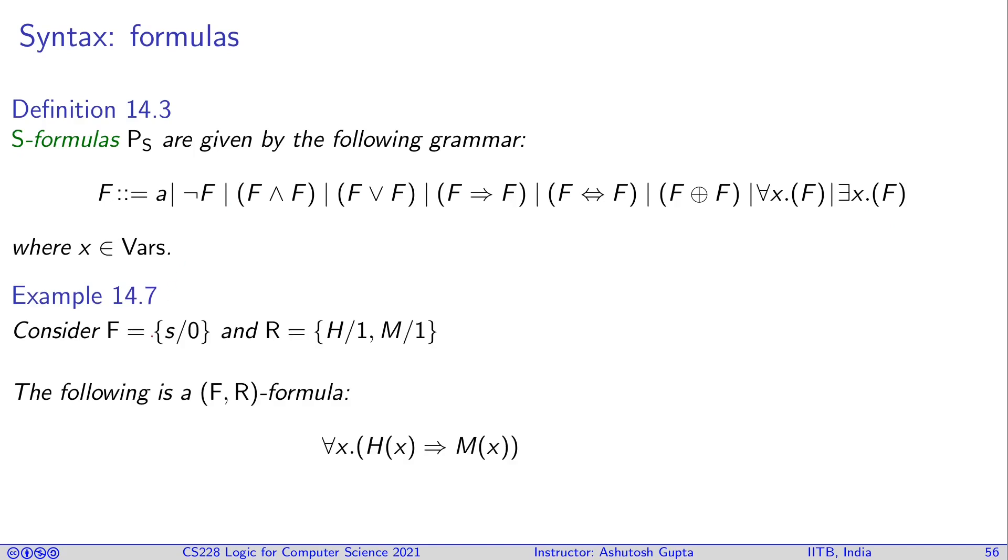Let's look at an example. You have a set of functions with one function and a set of predicates with two predicates. Then you write: for all x, h of x implies m of x. These things are atoms. This creates a formula, and when you put a quantifier on it, it also makes a formula.